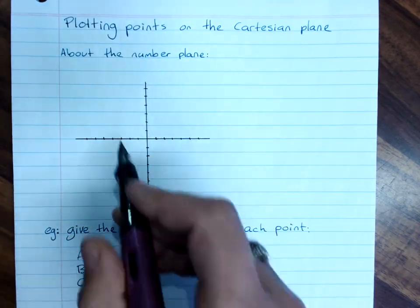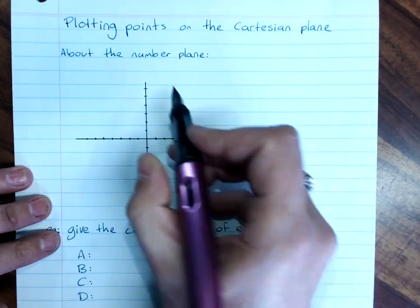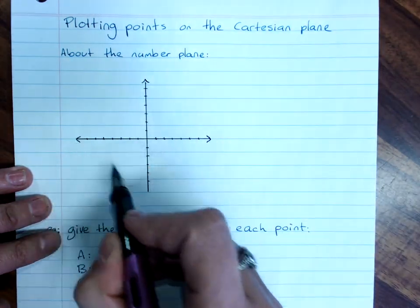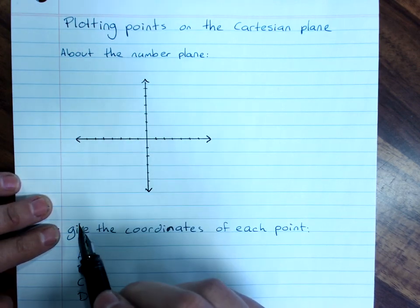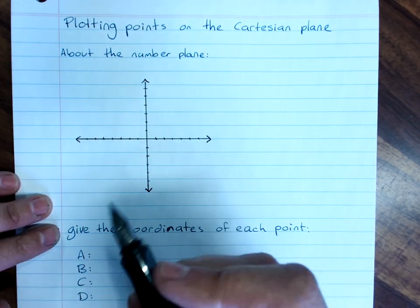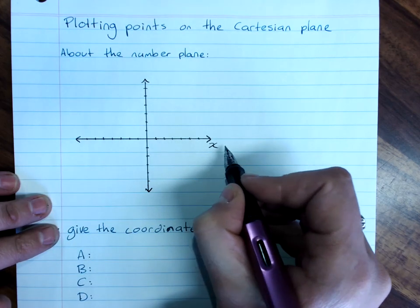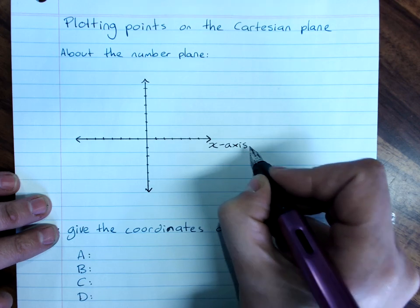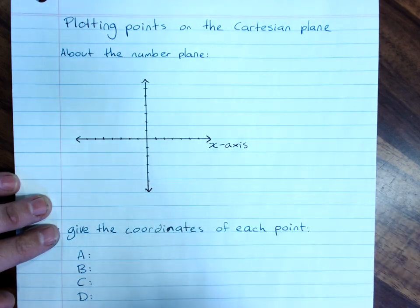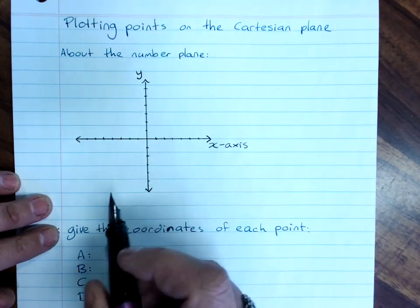When you have even gradations you'll remember that the number plane keeps going on forever in all four directions, which is why we put an arrow at the end of each. The horizontal axis is x. So this is the x axis, but you can just label it x. The vertical axis is the y axis. We just label it y.